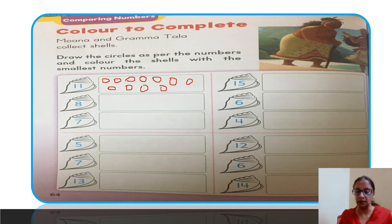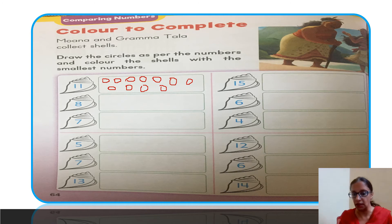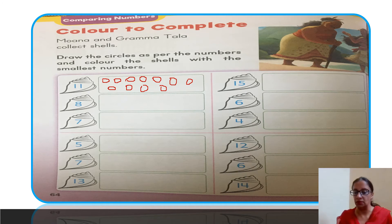You only have to color this shell (number five), but you must make circles for all the shells. It's not that you only draw for five or the biggest — you draw circles for all, and then color only the shell with the smallest number. Similarly in the next rows, make circles for all and color the shell with the smallest number. Here the smallest number is four, so color the shell with number four. This way, complete this page, then move ahead to the second page.